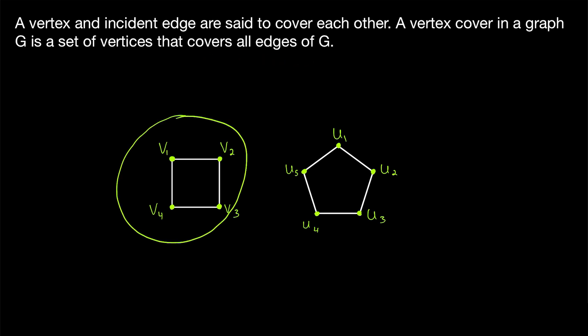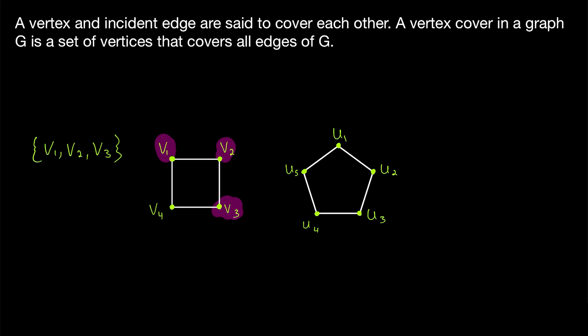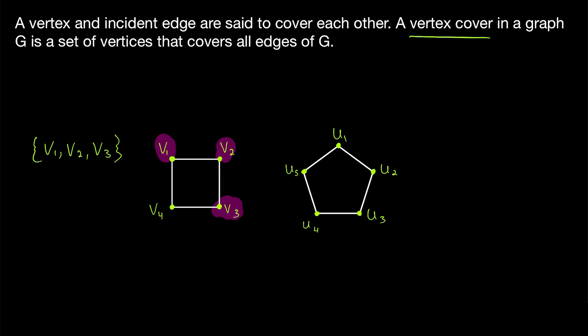Looking at our four cycle, if we include the vertices V1, V2, and V3 in a set, together all three of them cover the graph. So this is a vertex cover — every edge in the graph is covered by at least one of these vertices. Remember, a vertex cover is made up of vertices, and they are covering the edges. An edge cover is the other way around: an edge cover is made up of edges and covers the vertices. But today we're talking about vertex covers.